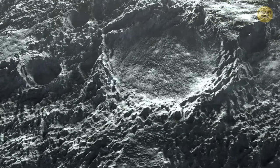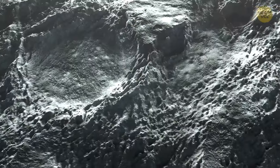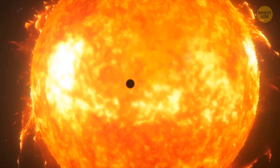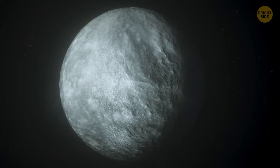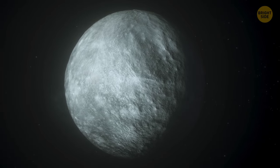Mercury is too small to hold onto its atmosphere, made up of hydrogen and helium. The planet is also too close to the Sun. That's why the solar winds keep sweeping away the little atmosphere the planet manages to gather.